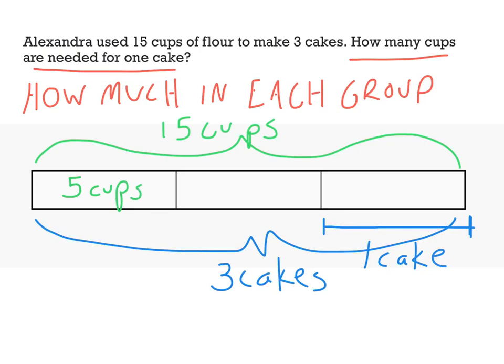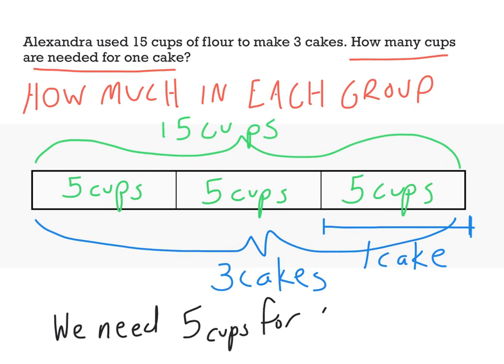That is five cups there, five cups there, five cups there. That's it. And our answer is, we need five cups for one cake. And if I can fit that in, we have 15 divided by 3 equals 5.